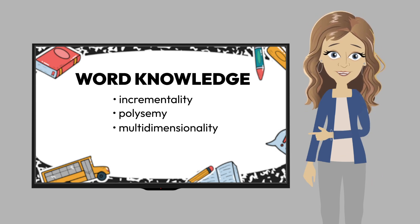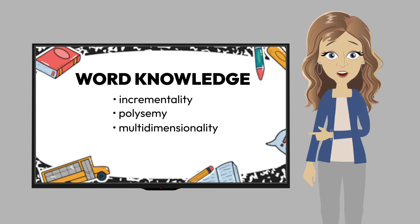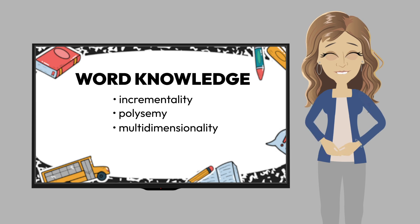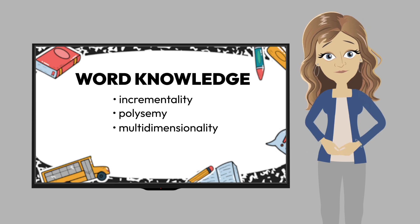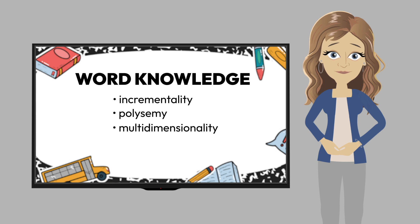Multidimensionality means that words have multiple forms and features and can include literal and figurative meanings. For example, "dog" as a noun meaning an animal, but "dog tired" as an adjective meaning worn out.